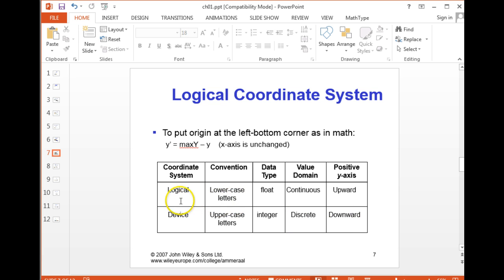The other thing is with the logical coordinate system, the value domain is continuous. With the device coordinate system, it's discrete. So what we do for the device coordinate system is we use integers, integer values for all our X's and Y's, which makes sense because they're all discrete values.